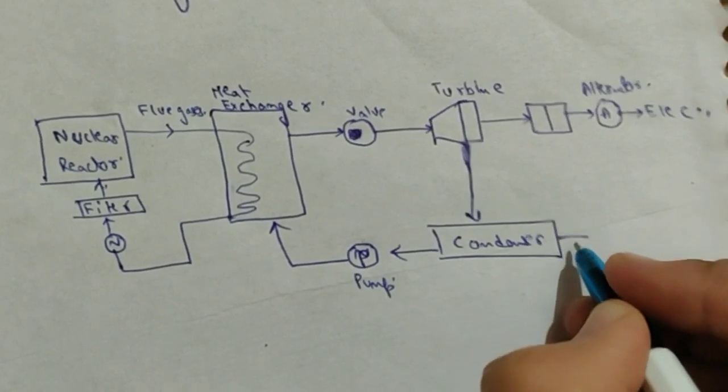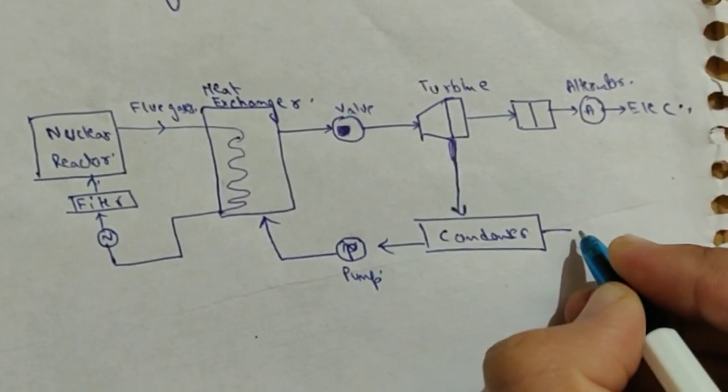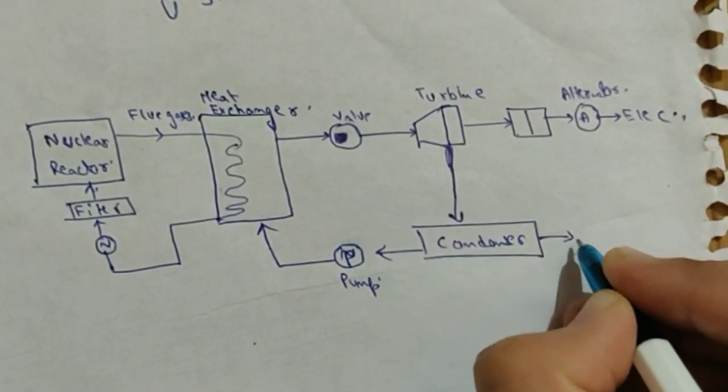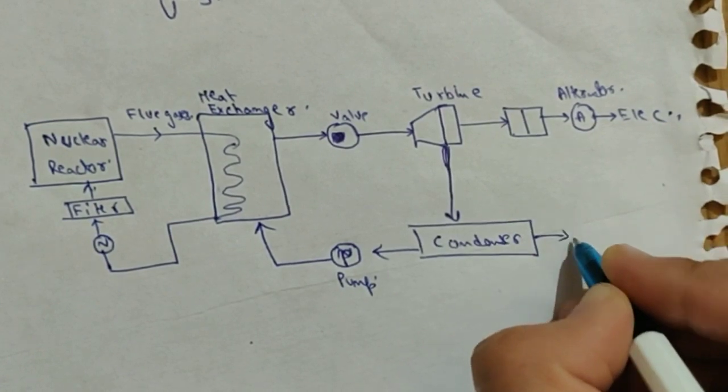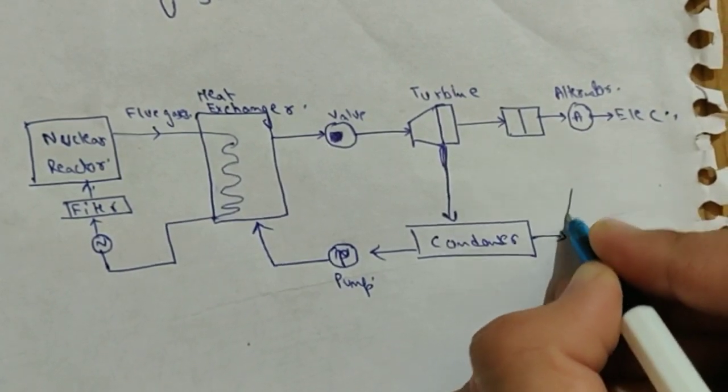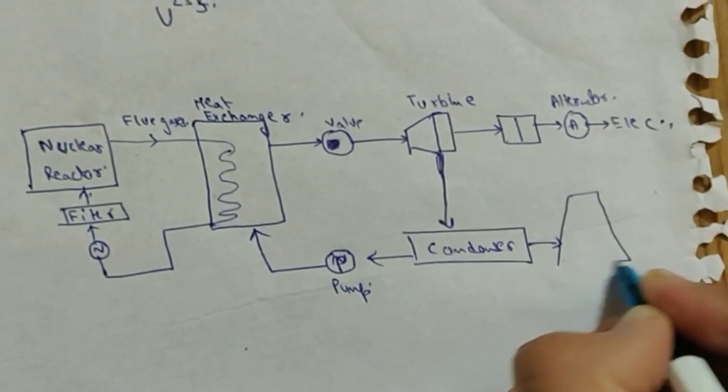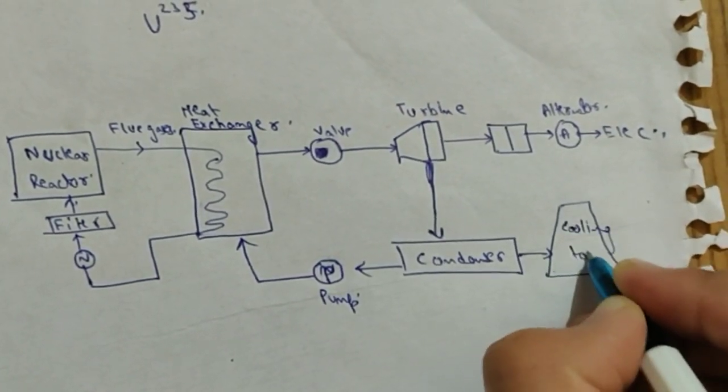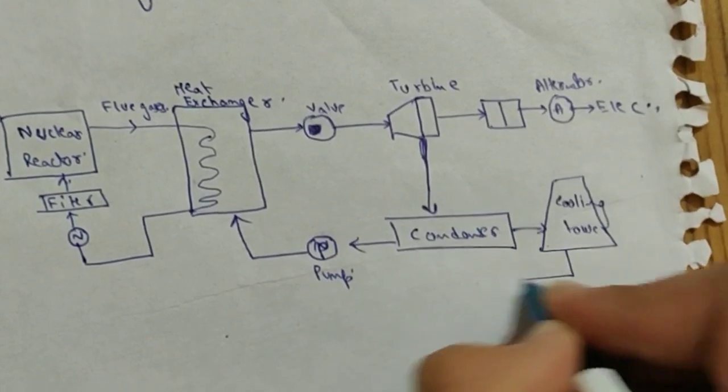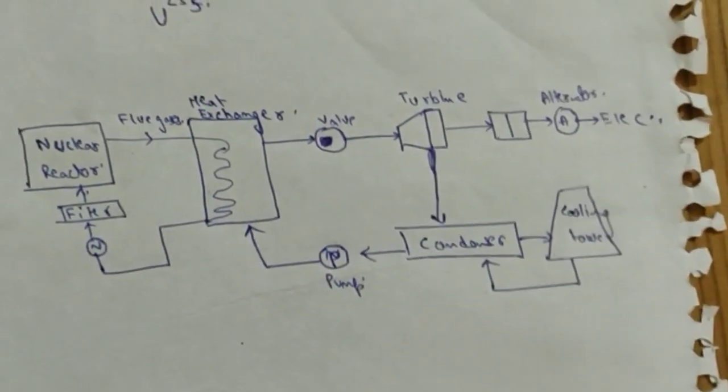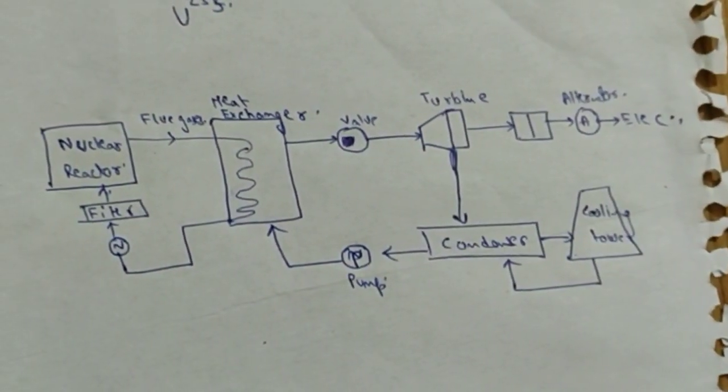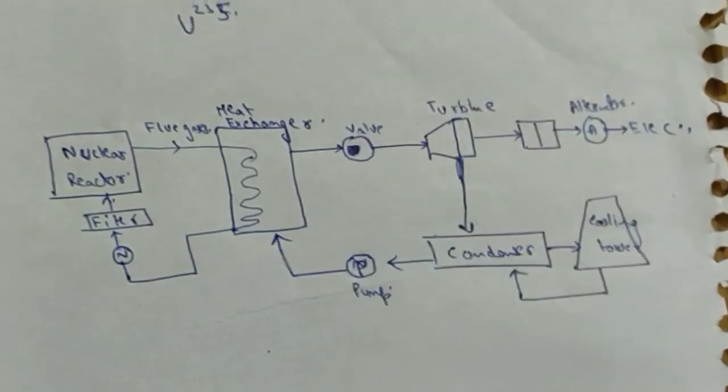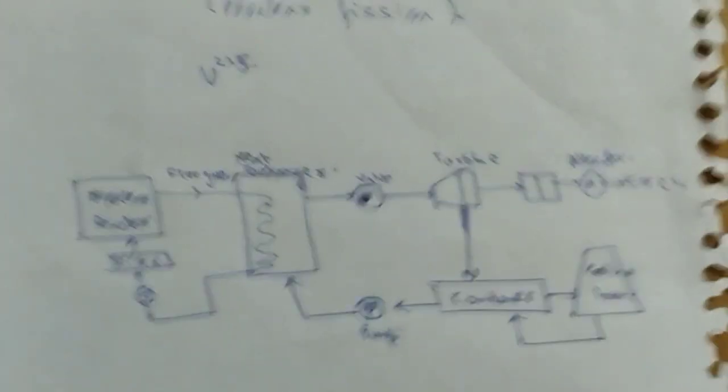Pumped back, this condenser is connected to a cooling tower. So this condenser is connected to a cooling tower which cools this turbine. So this is the setup of a nuclear power plant, a schematic diagram to be more accurate.